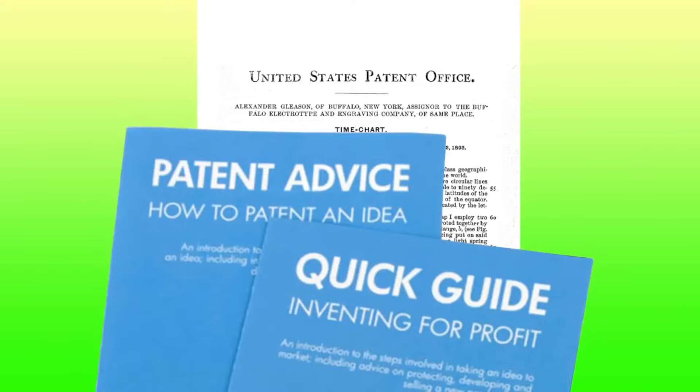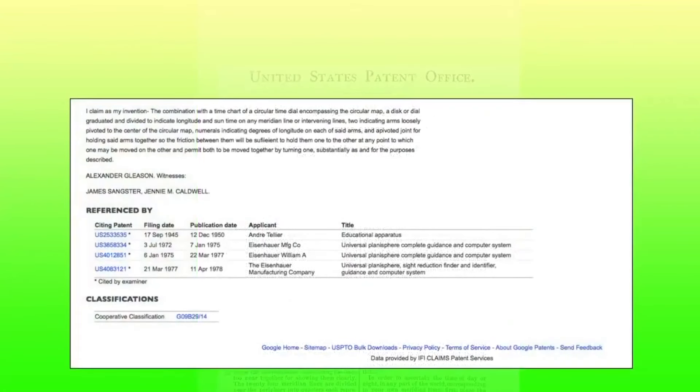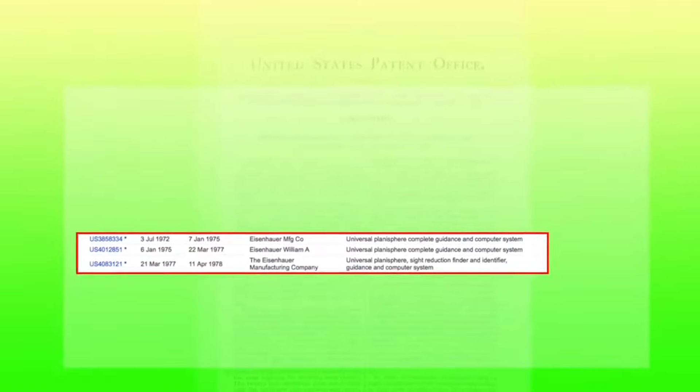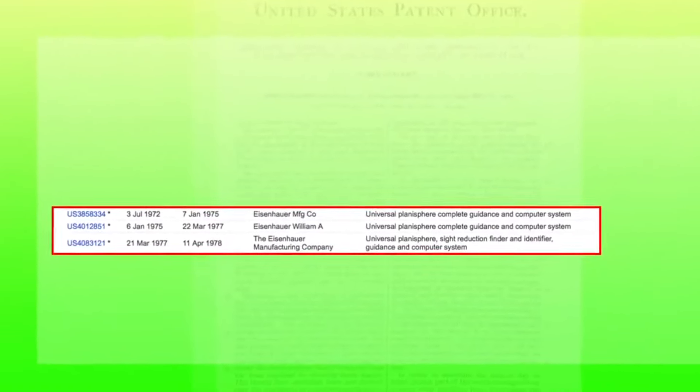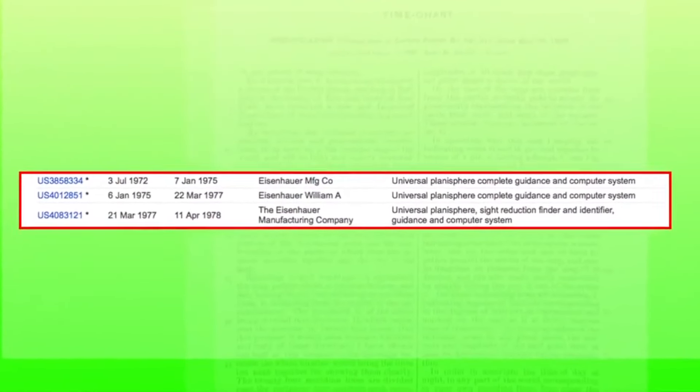So let's see if anyone else thinks Alex Gleason's layout is credible. If you run a search on the internet using Alex Gleason's patent number, you'll find that there are three patents that use his map. All granted in the 1970s for a device called the Universal Planisphere Complete Guidance and Computer System that was invented by one William A. Eisenhower.